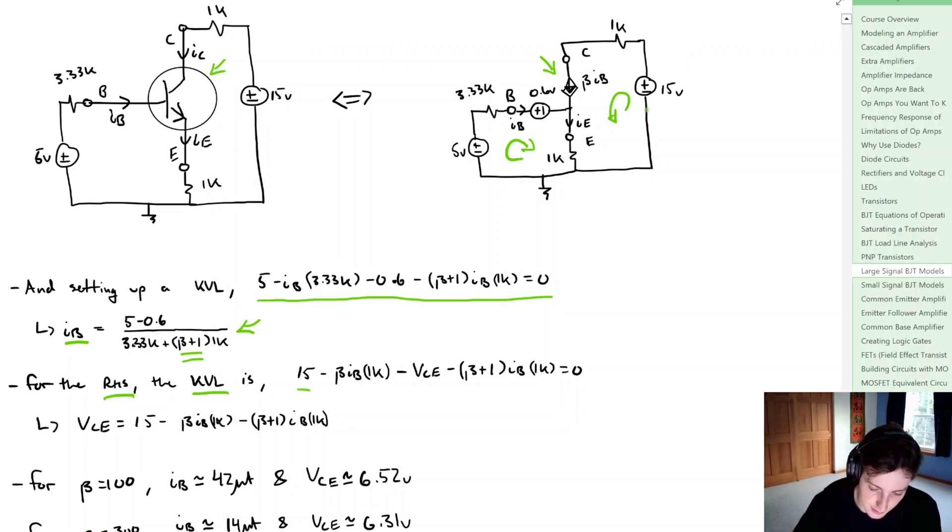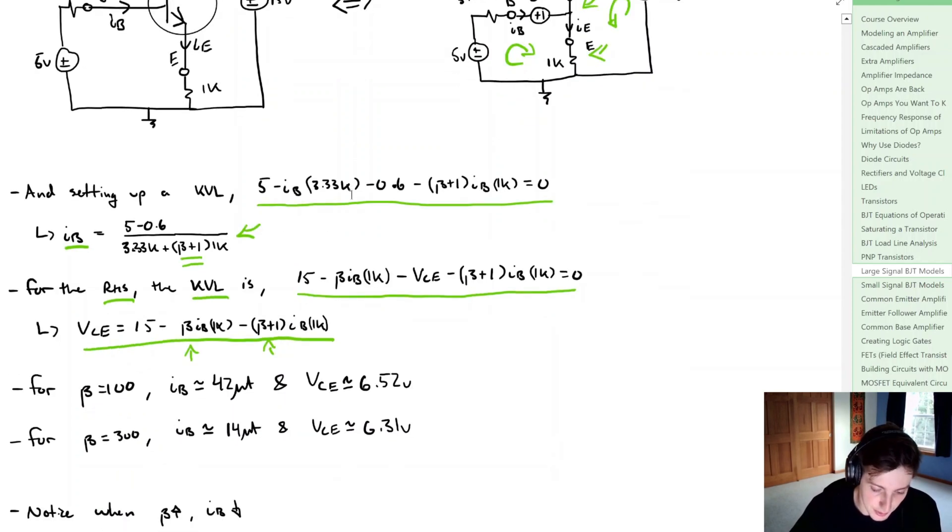What we get is 15 volts minus the voltage drop over again that one K on the emitter now. That's going to be equal to zero and we end up with another term for VCE. Again we're not plugging in beta yet. But given how this problem was stated...